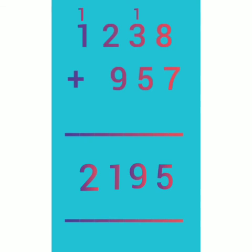This is called regrouping. Here regrouping done twice. If you are clear with number bond concept and place values, you can do any type of addition easily.